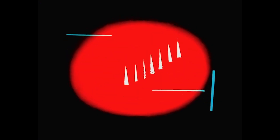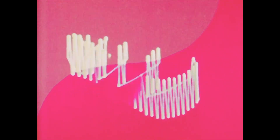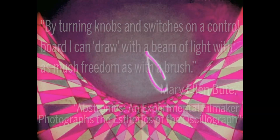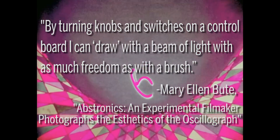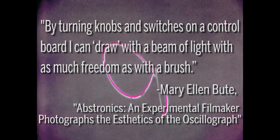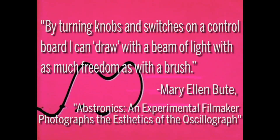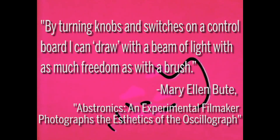Butte was a technical filmmaker, and she was just as apt to collaborate with mathematicians and engineers as she was with other artists. For her film Abstronic, she teamed up with a scientist who worked at Bell Telephone Laboratories to create an oscilloscope that Butte could play like a musical instrument. She describes it saying: "By turning knobs and switches on a control board, I can draw with a beam of light with as much freedom as with a brush."